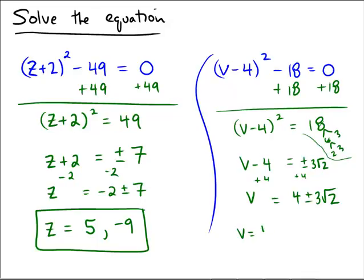If for some reason you have to write them separately, don't forget that it's 4 + 3√2, and it's also 4 - 3√2.